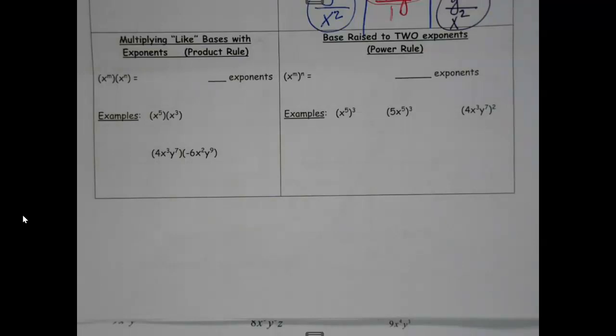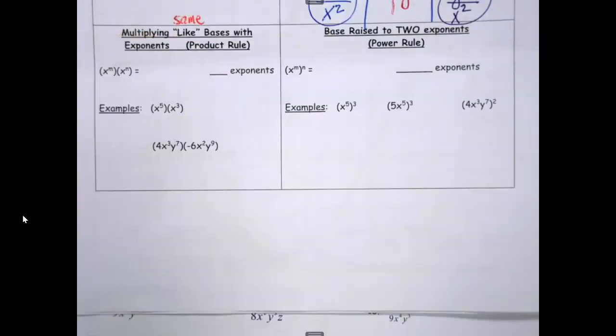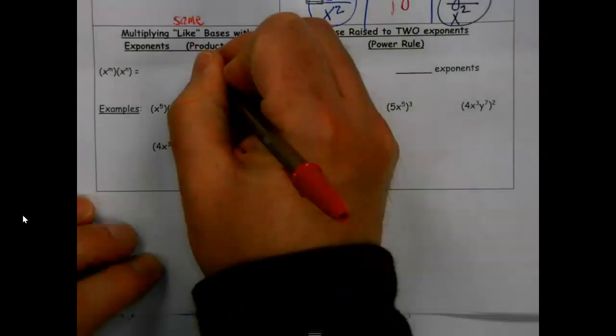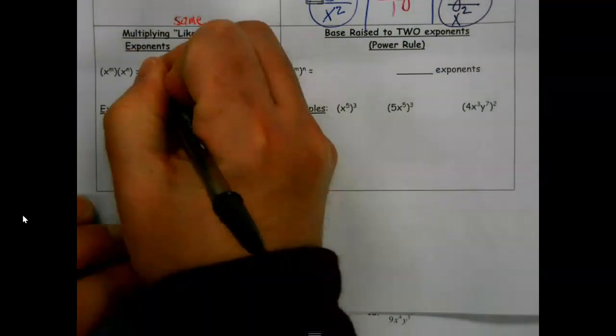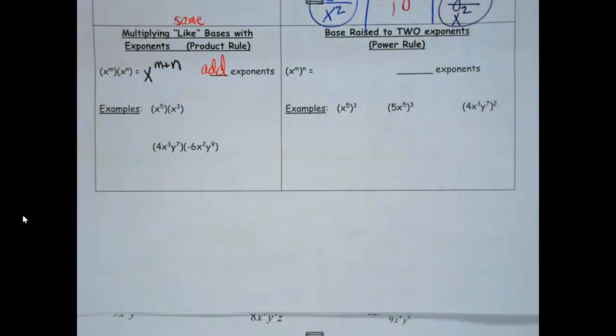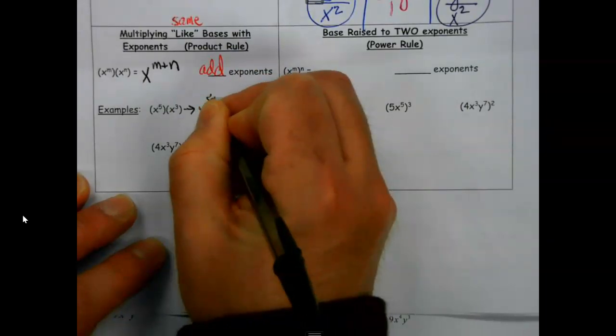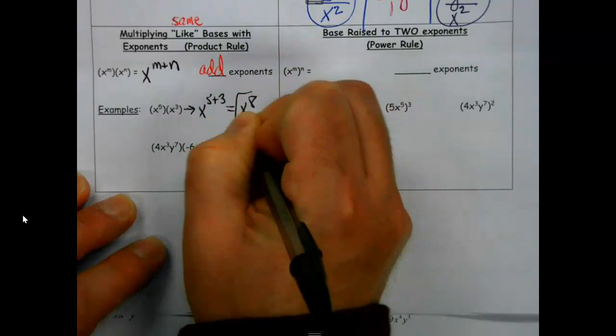So to build on that for today, we're going to be multiplying with what we call like bases, we can also call that the same base. It just means for us to multiply two things together with exponents, it has to be the same variable or number. So like here, these are both x. I can go ahead and do the rule with these. And what is that rule? The rule is we're going to add the exponents. So here, if I have two variables that I'm multiplying together and they both have exponents, we're going to add those exponents together. So it can be as easy as, these both have x, we're just going to do five plus three, get x to the eighth.